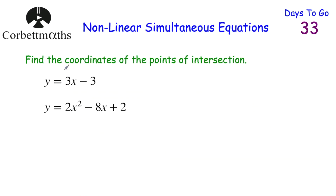Let's look at our last question: find the coordinates of the points of intersection of y equals 3x minus 3, which is a straight line, and the quadratic y equals 2x squared minus 8x plus 2. We've got a U-shaped parabola and a straight line — they can cross twice, touch once, or not touch at all. Since we're asked for the coordinates of intersection, I'm guessing they intersect twice.